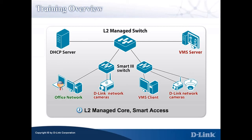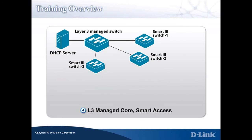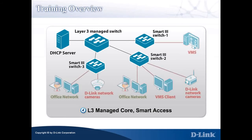Usage Scenario 4 is a two-layer network with Layer 3 switches as core and Smart 3 switches as access layer switches. It is a typical enterprise setup with VLANs and a routed network.